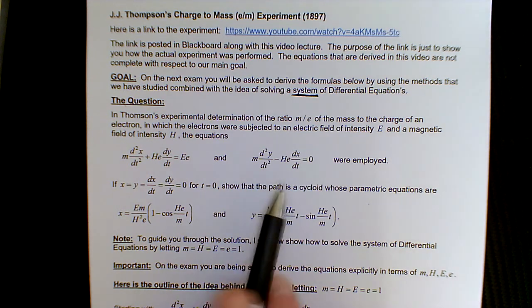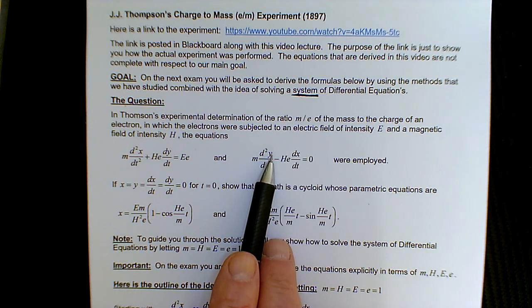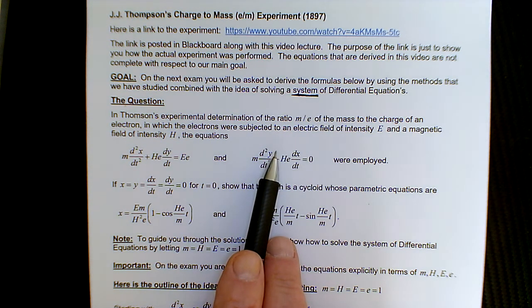So in this experiment, basically, if you watch this video, you'll see the idea. You just impose on this electron a magnetic field and an electric field.